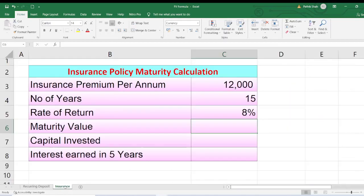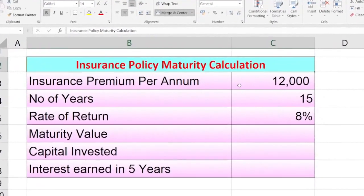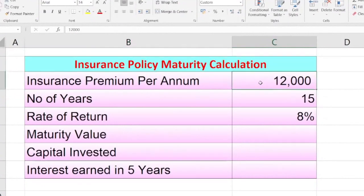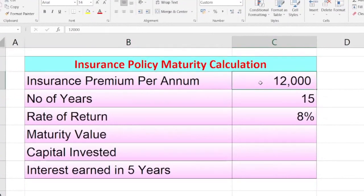Now we will see the insurance policy maturity calculation. Let's take an example. You have taken an insurance policy and the premium amount is 12,000 per annum. So it is per year. And how many years you are paying? Let's take an example of 15 years and the rate of return is 8%. Now we will calculate the maturity value.